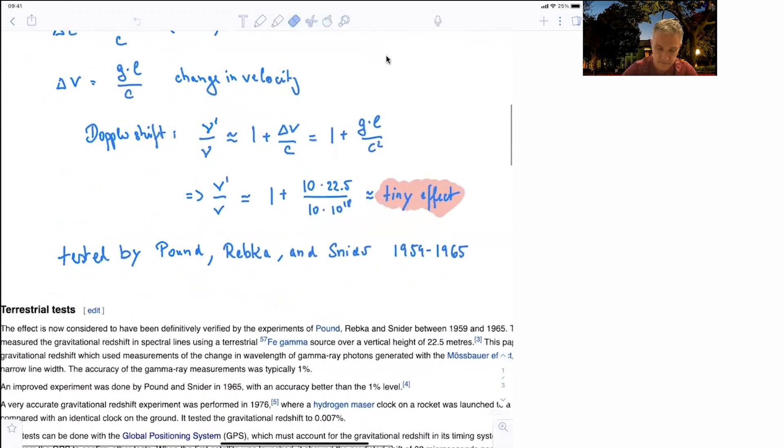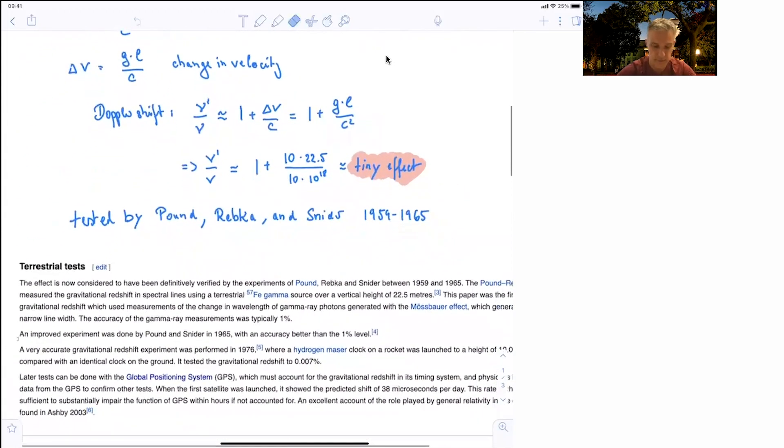experimentalists at Harvard tested this effect. Pound, Rebka, and Snyder in the 1950s and 60s were able to show this very tiny effect.